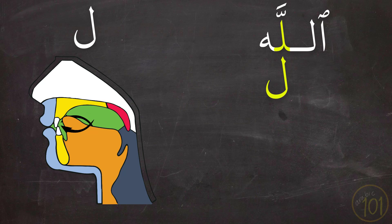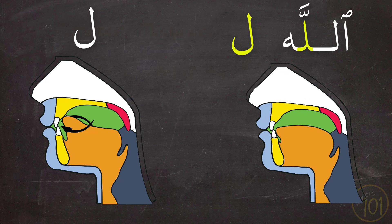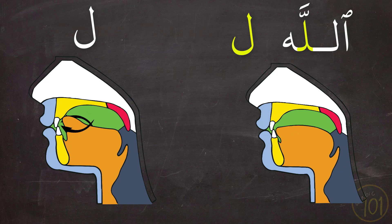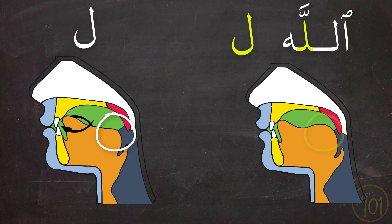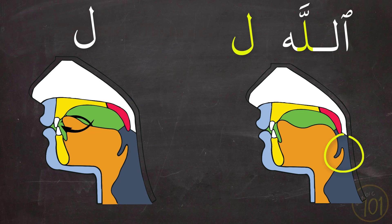Pronouncing the Laam like that requires different movement. The front edge of the tongue makes the exact same movement as with the regular Laam — it is raised and pressing against the alveolar ridge. However, the back of the tongue is also raised, putting the tongue in a concave position, which enables the sound to be full mouth. We also notice that the epiglottis is pushing back, which helps make the sound fuller and darker.